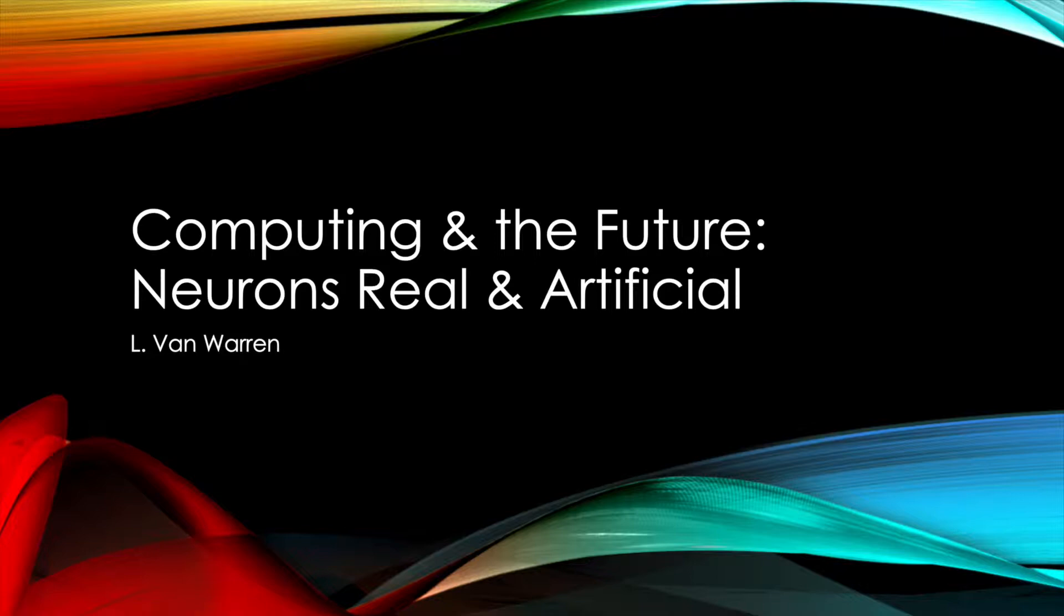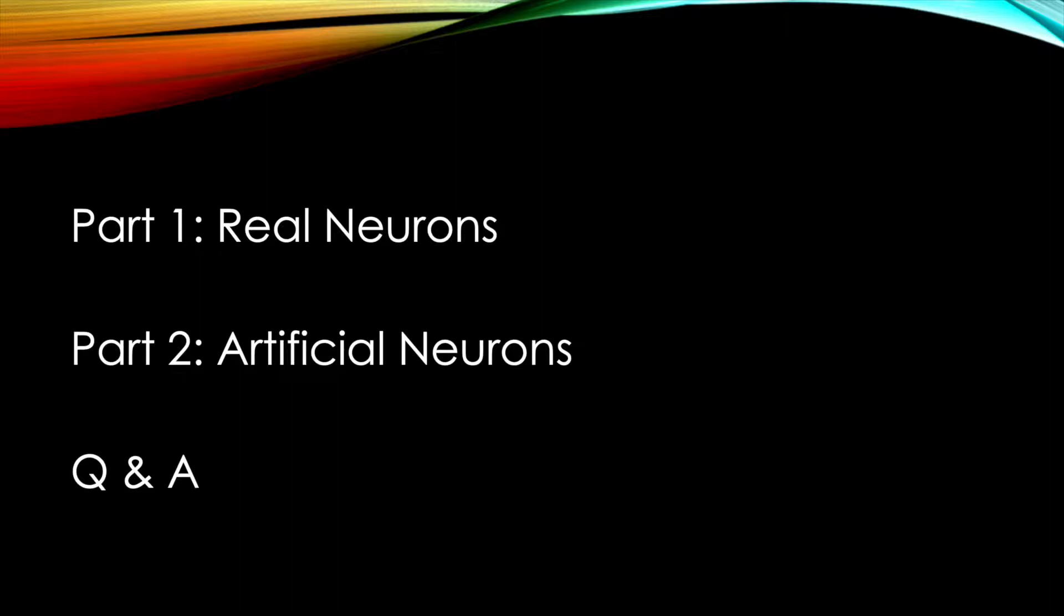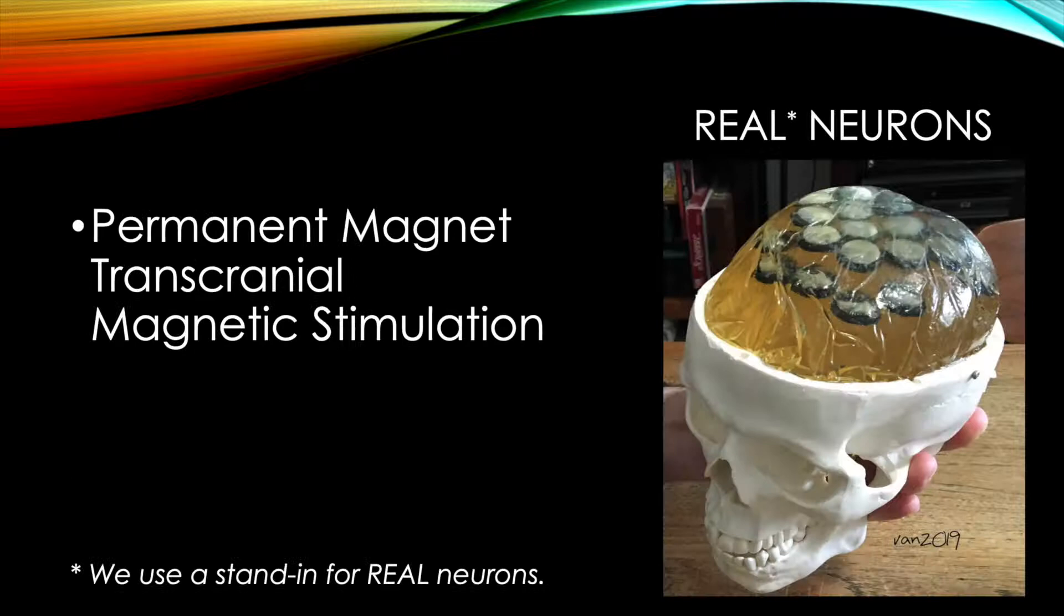Computing in the future: neurons real and artificial. I'm Van Warren. Part one, we're going to talk about some real neurons. In part two, we'll talk about artificial neurons, and after that we'll wrap up with a question and answer period.